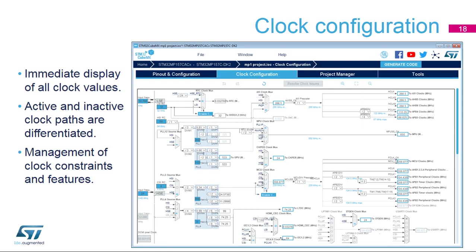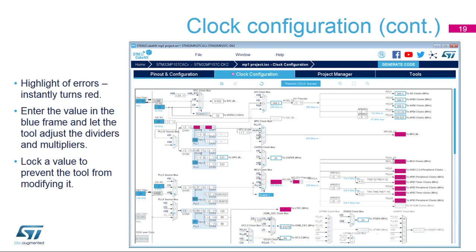The Clock Configuration tab provides a schematic overview of the clock paths, along with all clock sources, dividers, and multipliers. Actual clock speeds are visible. Active and enabled clock signals are highlighted in blue. Drop-down menus and buttons serve to modify the actual clock configuration. If a configured value is out of bounds, it immediately turns red to highlight a problem. Enter the required clock speed in a blue frame, and the software will attempt to reconfigure multipliers and dividers to provide the requested value.